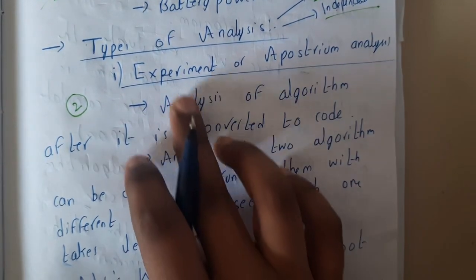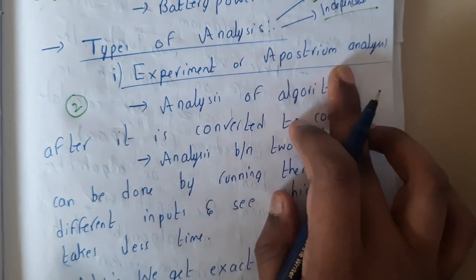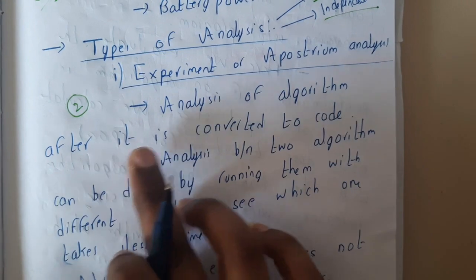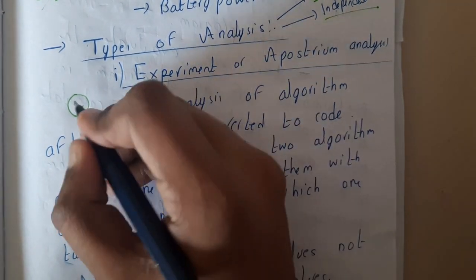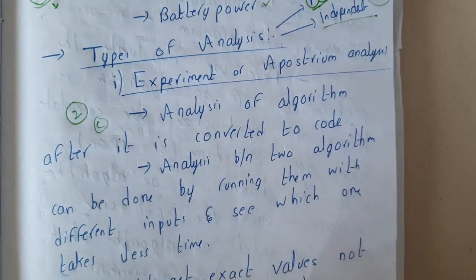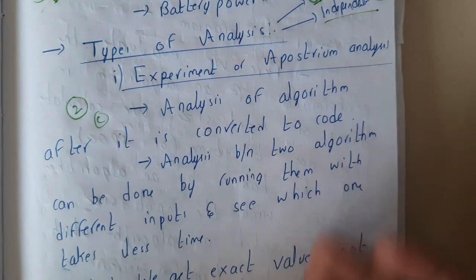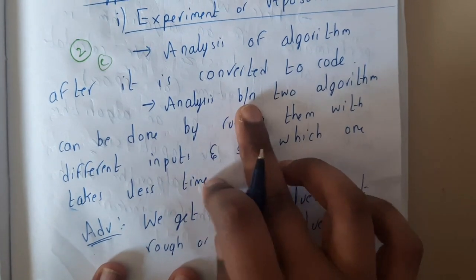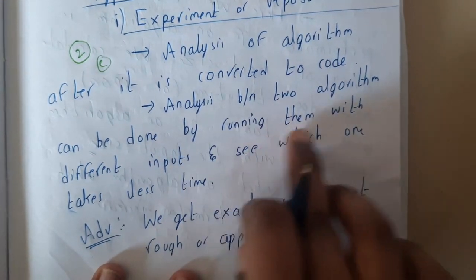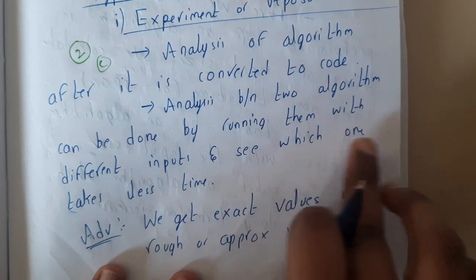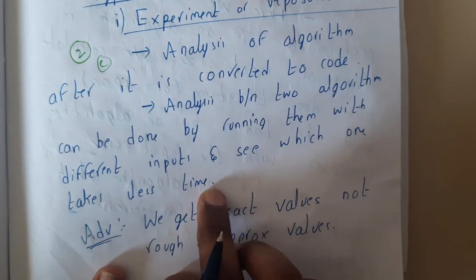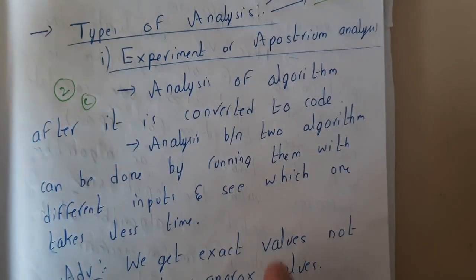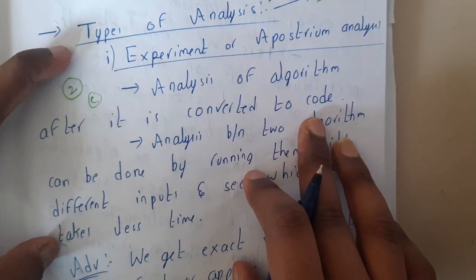Now let us go through the first step, that is experimental or A Posteriori analysis. In this analysis of the algorithm, after it is converted into code, you will be doing this analysis. You will be understanding the disadvantages and advantages. Analysis between two algorithms can be done by running them with different inputs and seeing which one takes less time. Whenever a student or a kid is doing a program, they will be seeing these kind of analysis.